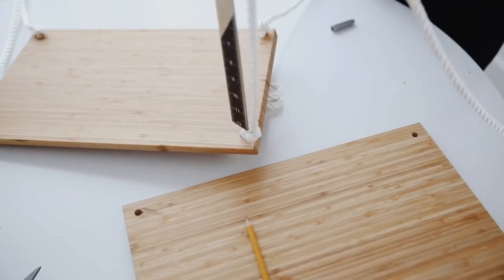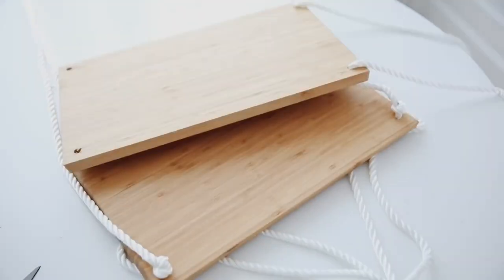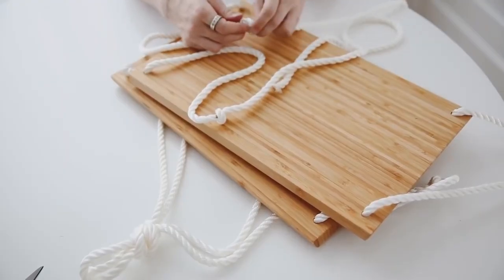So using a ruler, measure down about 12 inches, make a marking, and just make sure that you tie your knot in the same spot. Once again, the great thing about this project is you can totally adjust the knots as needed.